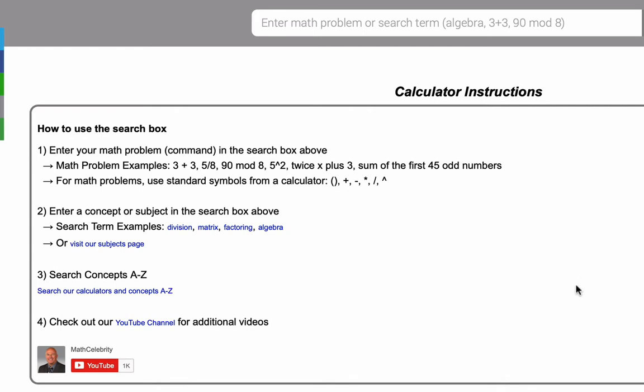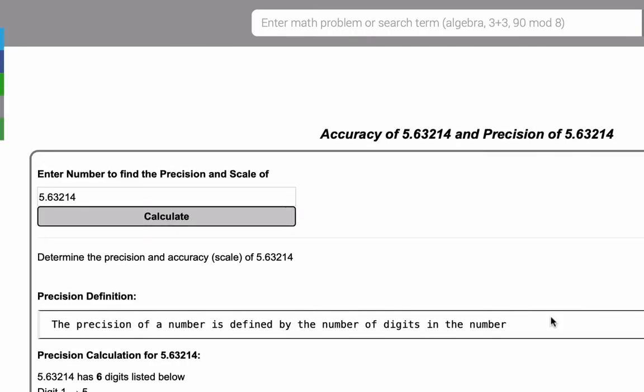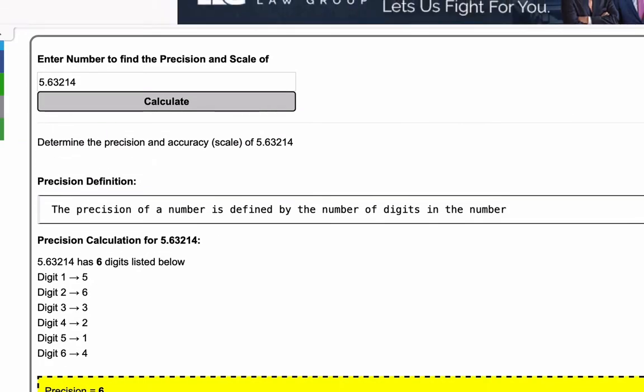Suppose we want to find the accuracy or precision of a number. We can say something like accuracy of 5.63214 hit return and here is our accuracy and precision calculator.